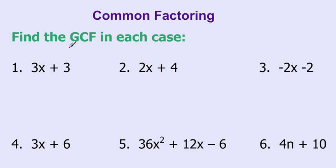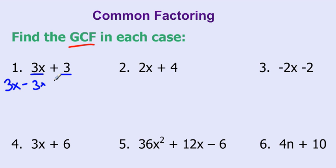Let's look at finding the greatest common factor in each of these binomials and trinomials. We have 3x plus 3. You want to figure out which number or term is common in both 3x and 3. I can see 3x is made up of 3 times x. The 3 is just 3 times 1. So the only thing common in both is 3. The greatest common factor in 3x and 3 is 3.